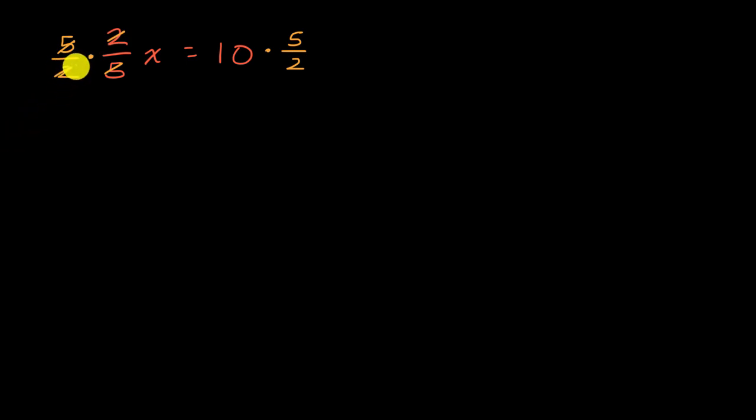And you might say, is that magical? How did you think of five-halves? Well, five-halves is just the reciprocal of two-fifths. I just swapped the numerator and the denominator to get five-halves. And then why did I multiply it times the right-hand side? Well, anything I do to the left-hand, I also want to do to the right-hand.